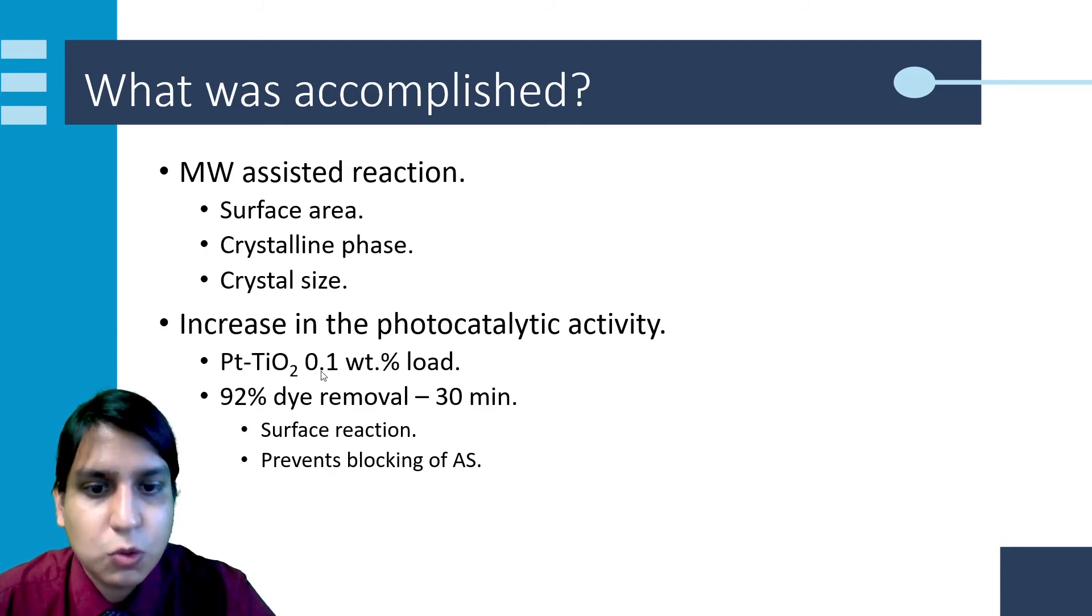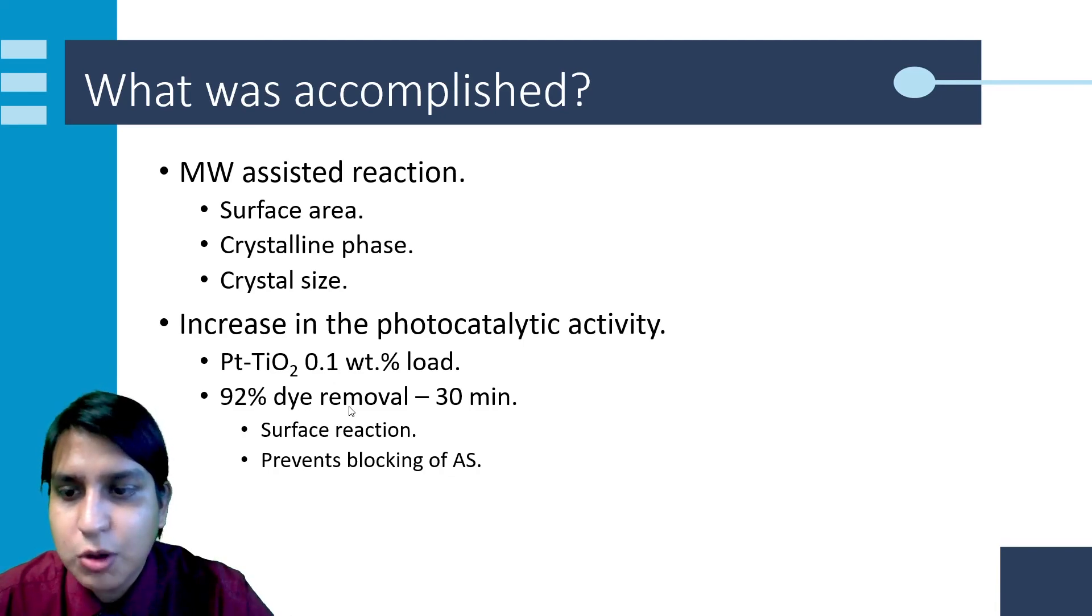The best material obtained in this work was titanium dioxide with 0.1 weight percentage platinum load. Employing this material in methyl red dye degradation reaction, we obtained values as high as 92% colorant removal after 30 minutes of reaction time. The kinetic analysis suggests that the dye reacts on the surface of the platinum-modified materials and prevents the blocking of active sites as occurs with pure titanium dioxide.